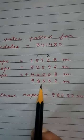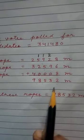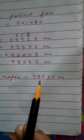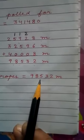Now 2 plus 3, 5, 5 plus 4, 9. So what you will get here 98,532 meters. So therefore total length of these ropes equal to 98,532 meter.